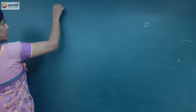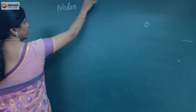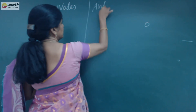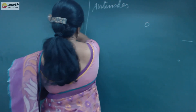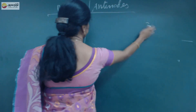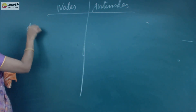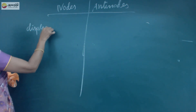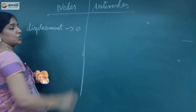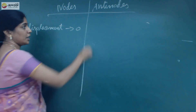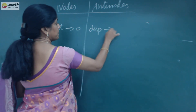Nodes and anti-nodes: the difference between nodes and anti-nodes in a stationary wave. First, at a node, the displacement will be 0. And at the anti-node, the displacement will be maximum.